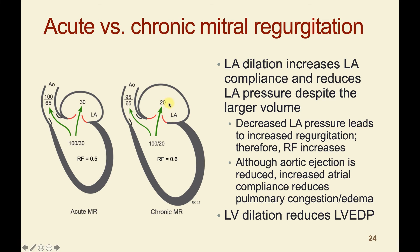When left atrial pressure becomes lower, a higher fraction of ejected blood goes into the left atrium, because the pressure difference between the left ventricle and left atrium determines the rate of flow across the mitral valve. If left atrial pressure becomes lower, you get more regurgitant flow — so the regurgitant fraction increases from 0.5 to perhaps 0.6, meaning only 40% of the total stroke volume is actually going into the aorta. However, the benefit of ventricular and atrial dilation is that it reduces pulmonary capillary wedge pressure.